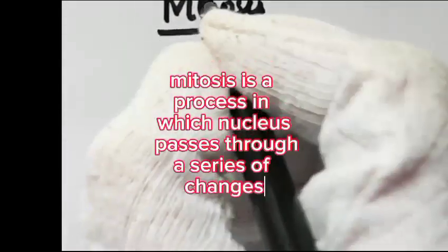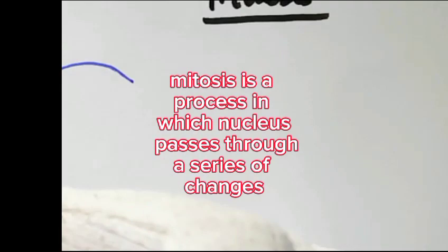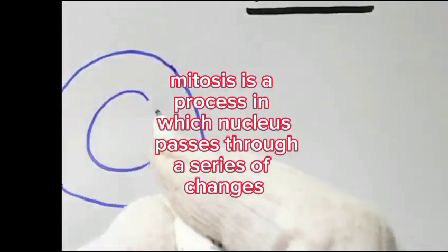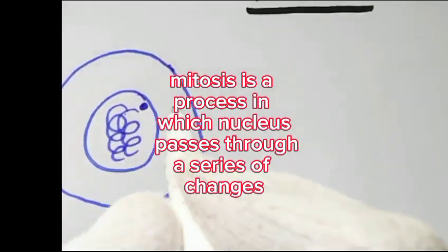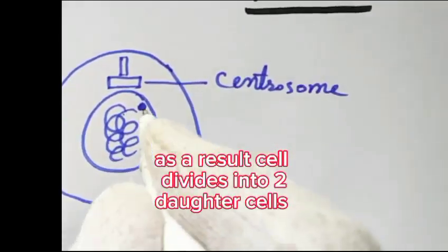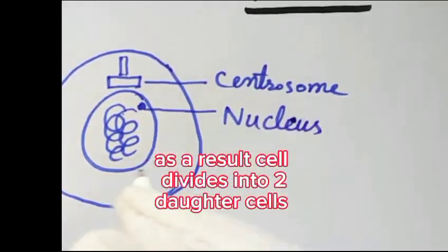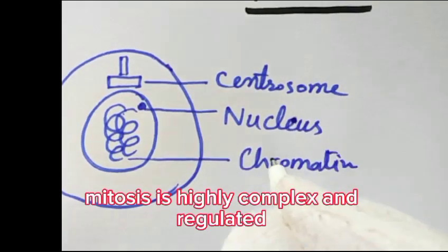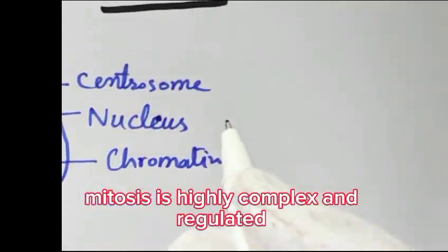Mitosis is a process in which nucleus passes through a series of changes. As a result, the cell divides into two daughter cells. Mitosis is highly complex and regulated.